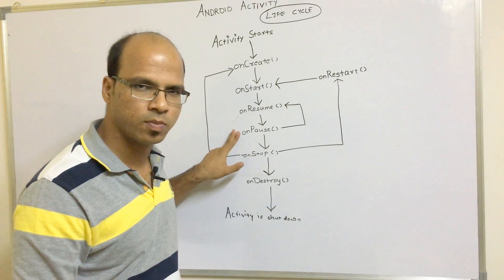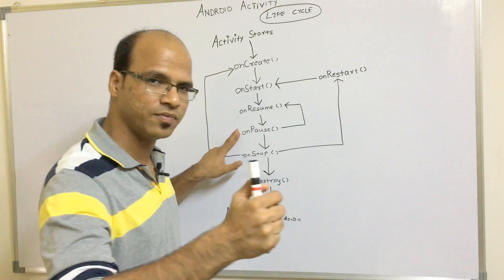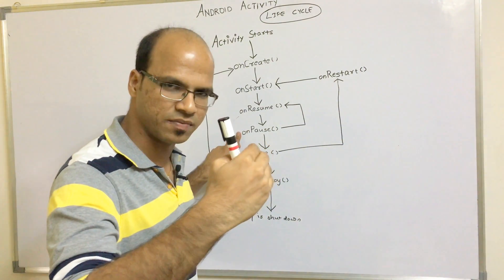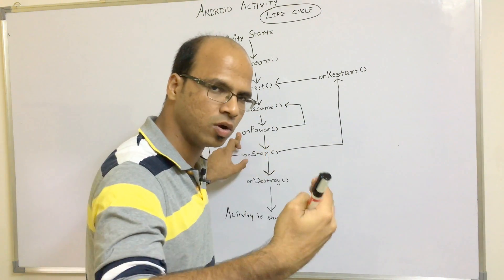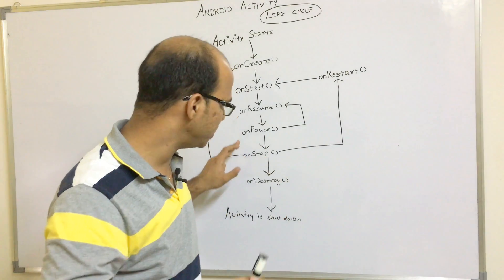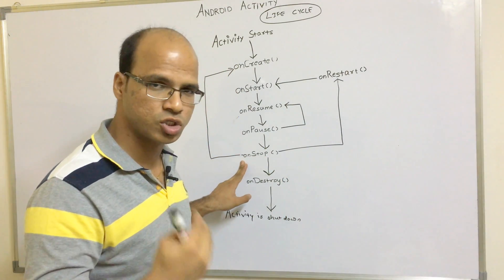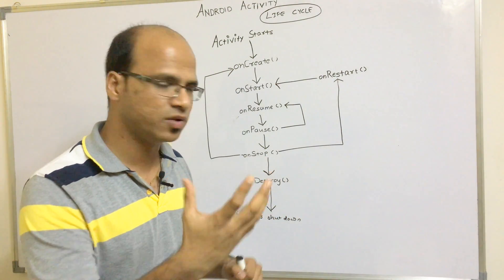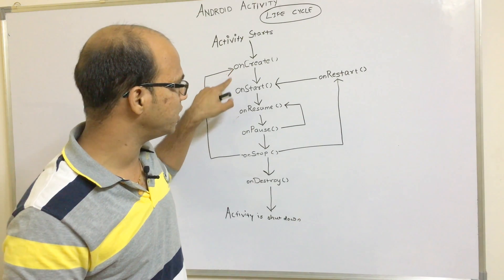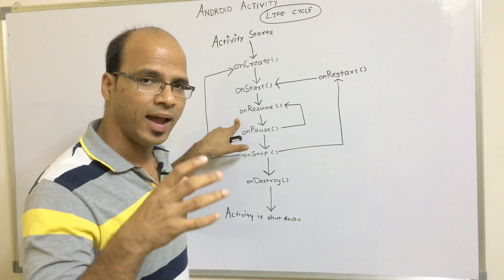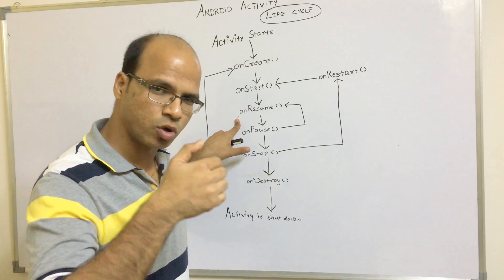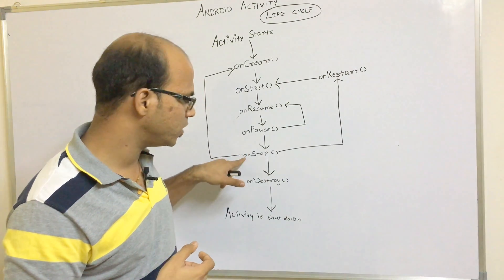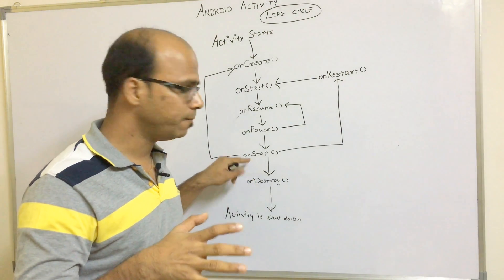First it will call onPause because you want to minimize the activity — it will not directly stop it. First it pauses the activity and the processes going on, and then it will call onStop. So to recap: when you start the activity it calls onCreate, onStart, onResume; and when you minimize by pressing the home button, it calls onPause and onStop.